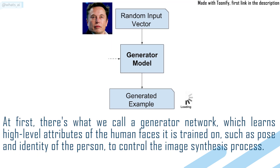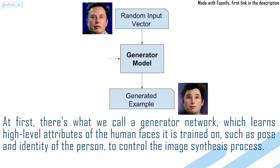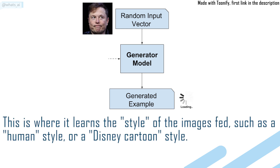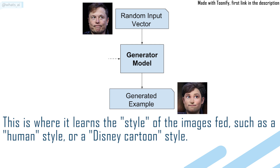There's what we call a generator network, which learns high-level attributes of the human faces it is trained on, such as pose and identity of the person, to control the image synthesis process. This is where it learns the style of the images fed, such as a human style or a Disney cartoon style.